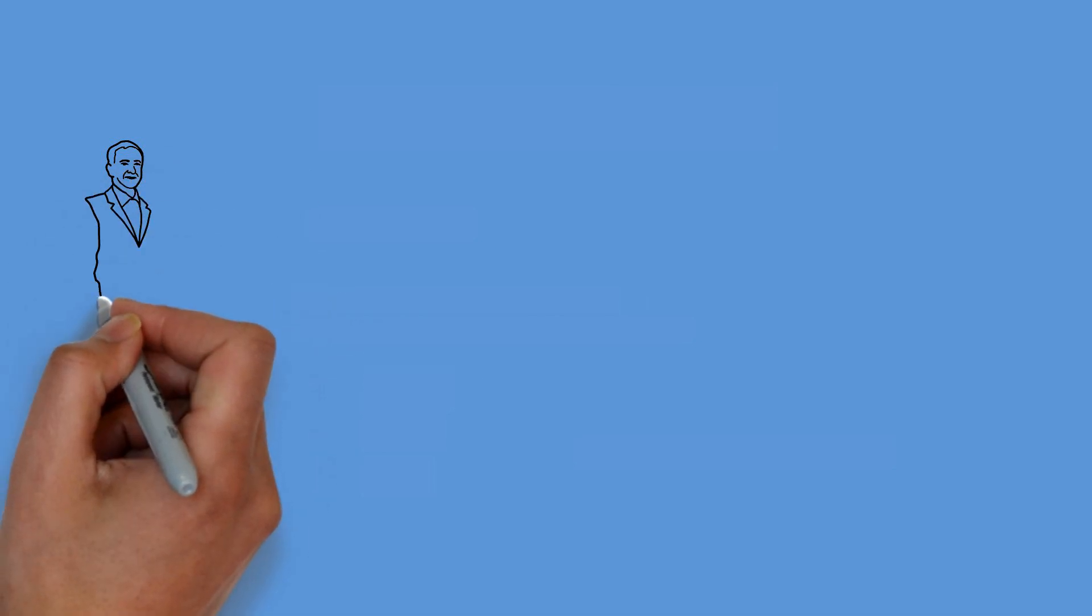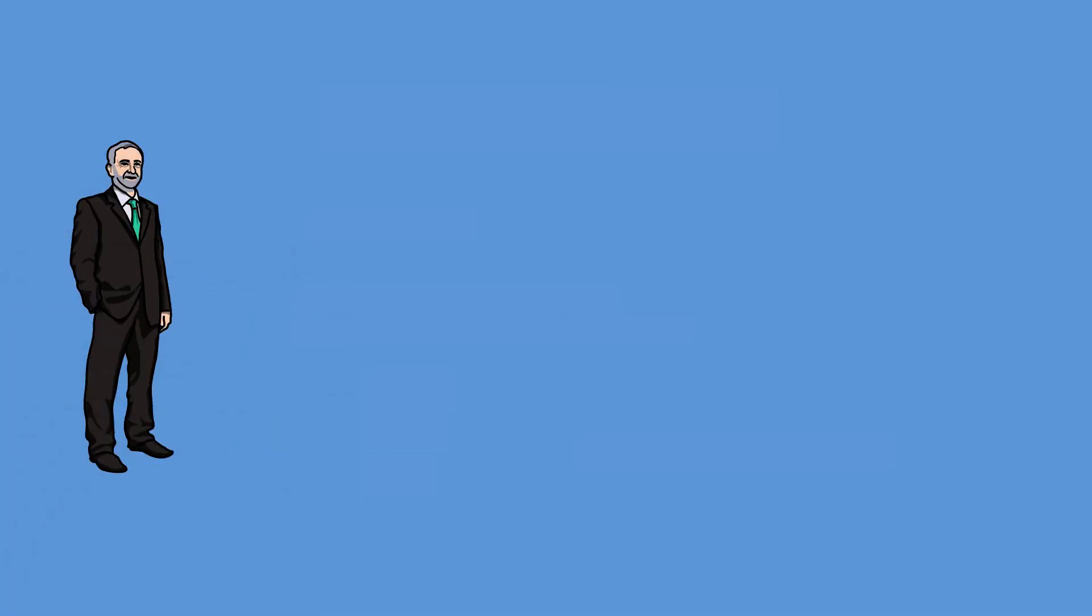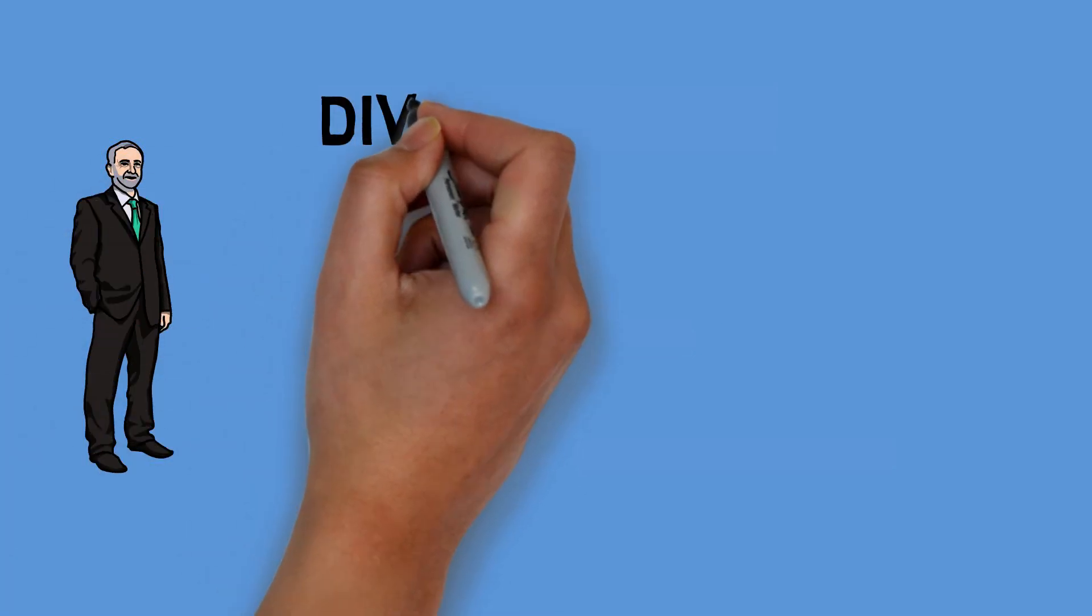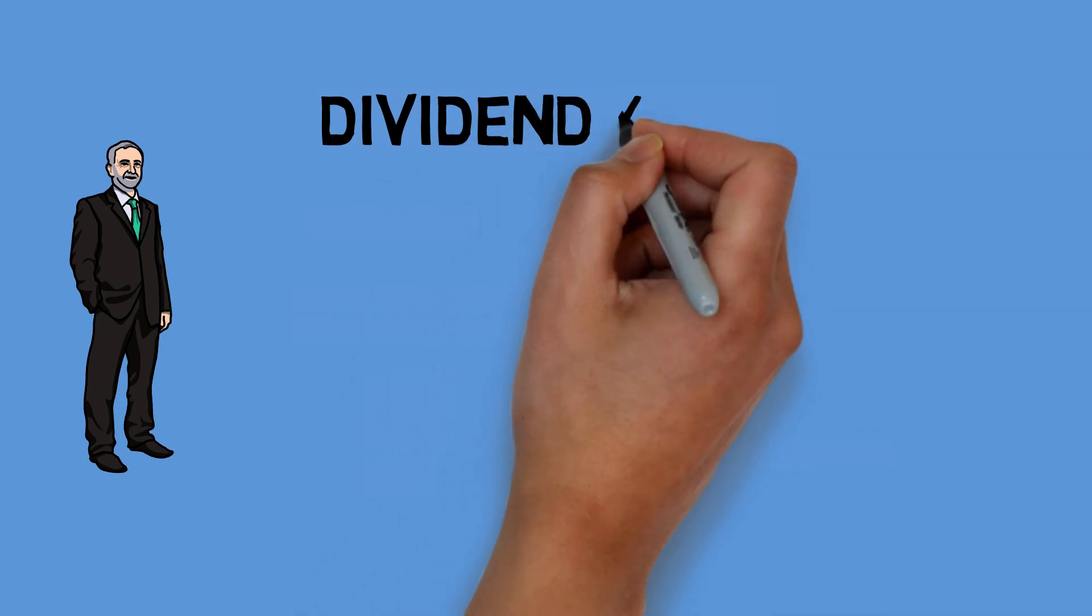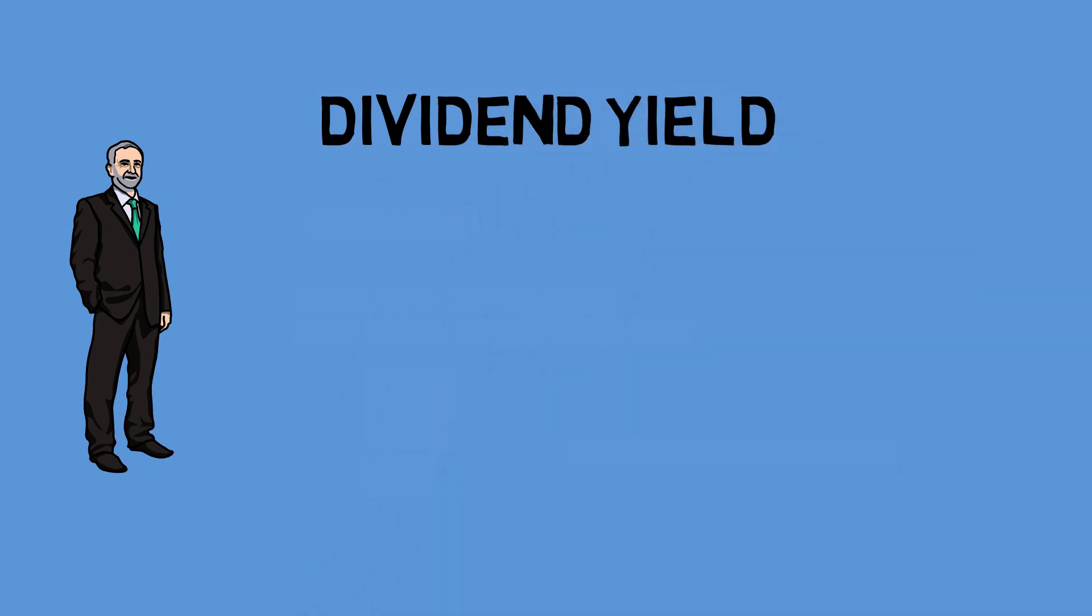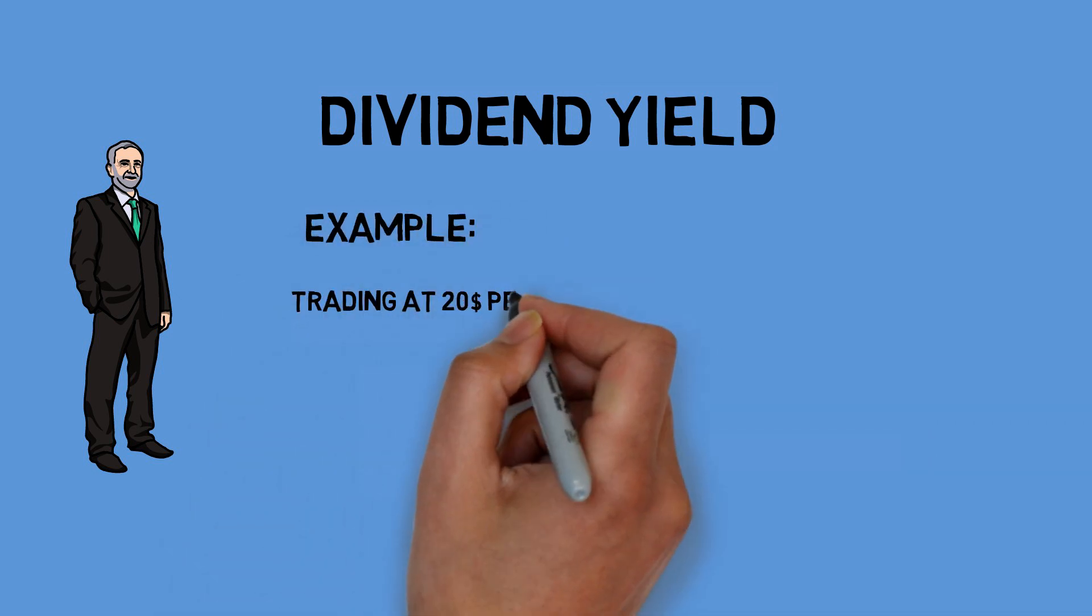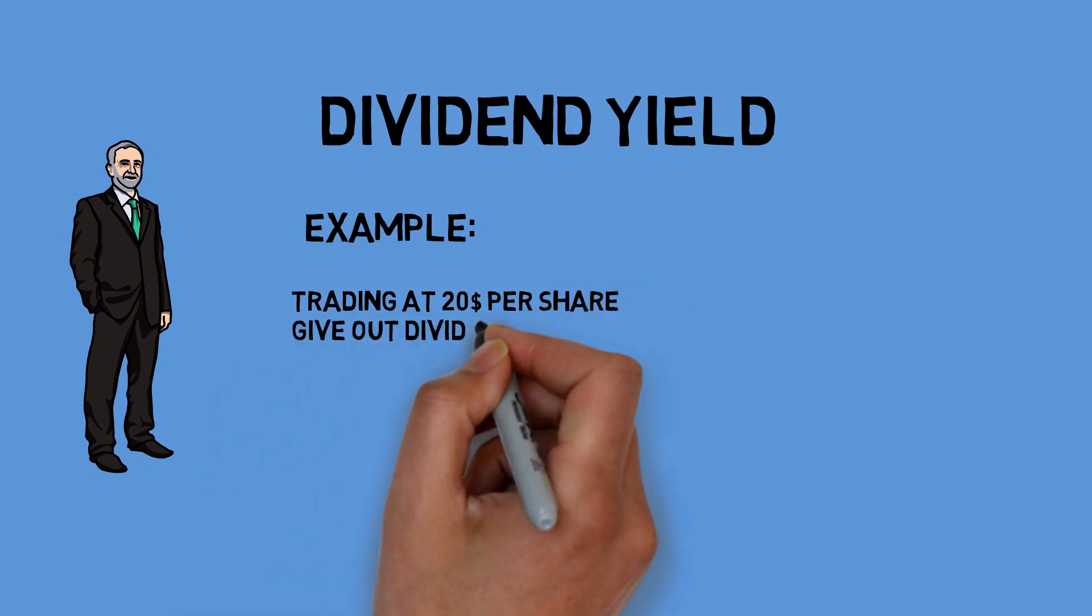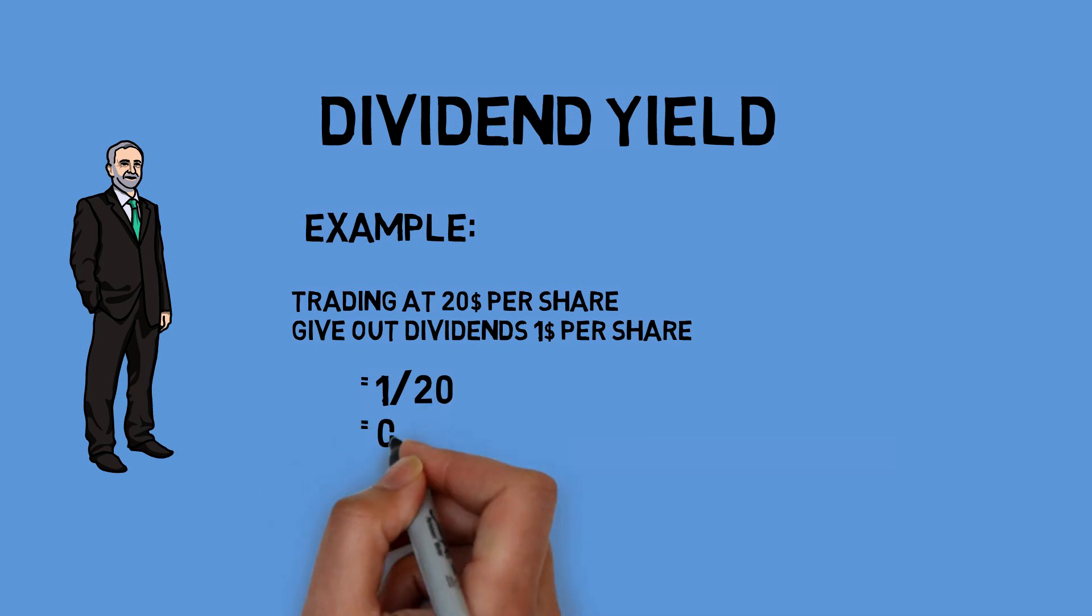To understand how dividend works, it is important to understand dividend yield, which is basically the percentage of return you get from dividends. Let's look at an example. A company is trading at $20 per share and gives out annual dividends of $1 per share, which will give us 5% in dividend yield.